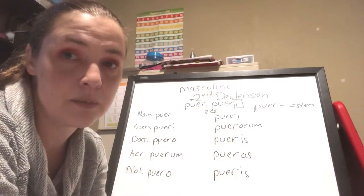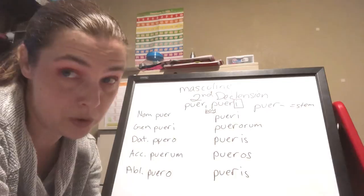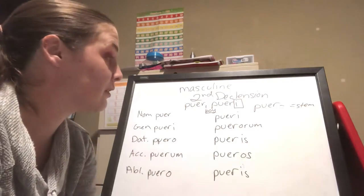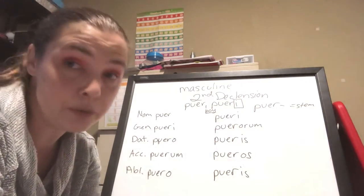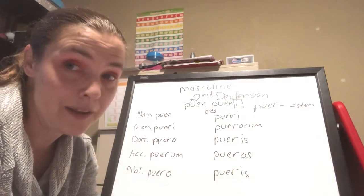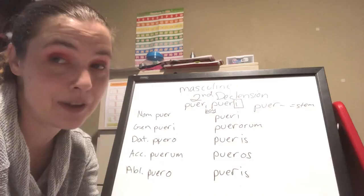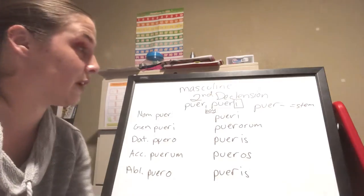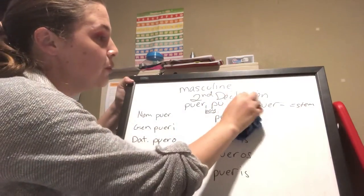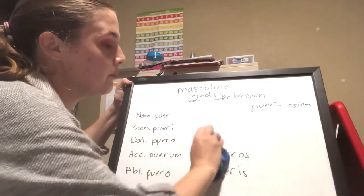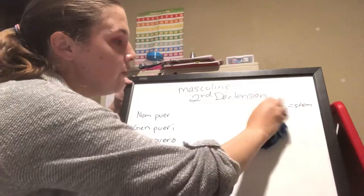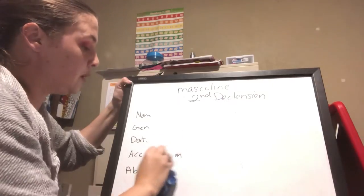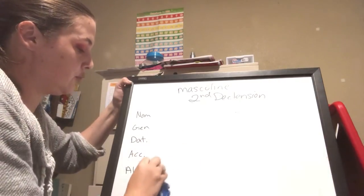The E is sometimes present and sometimes not — it depends on the word. This one keeps its E. There are words that lose their E, and you follow the same pattern for declining them, but you're going to have to know that genitive singular. If you don't, you can make some pretty significant mistakes.